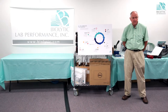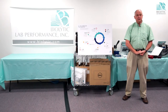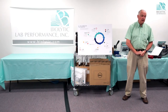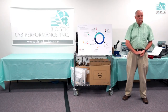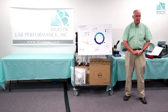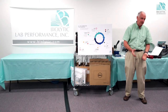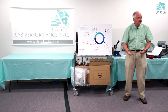DCA is a milder acid. Since every cycle you're exposing the oligo to acid, the longer the oligos you're trying to make, the more likely you might want to use DCA instead of TCA. TCA is the one that's typically used — it goes faster, and everybody wants faster. Time is money.